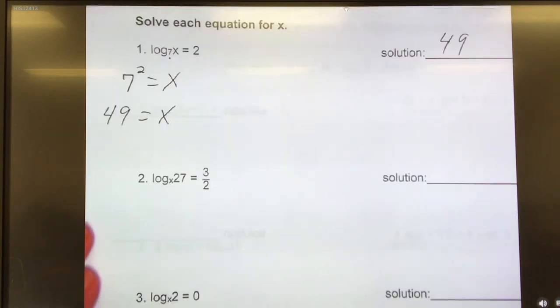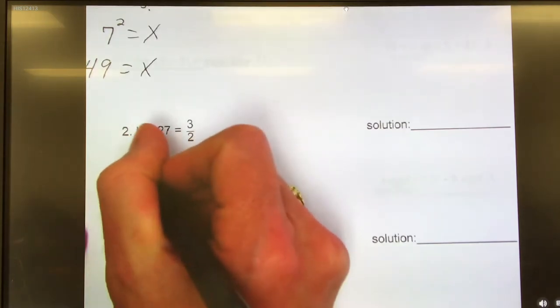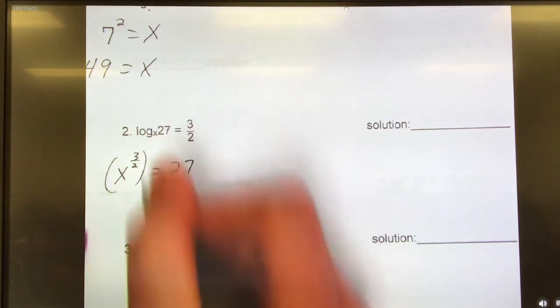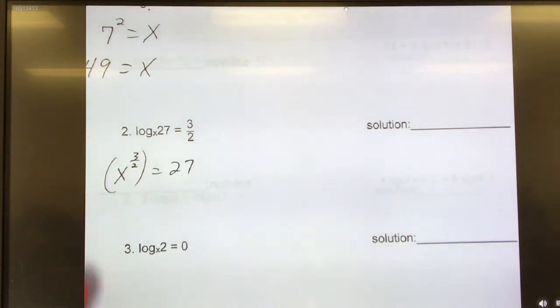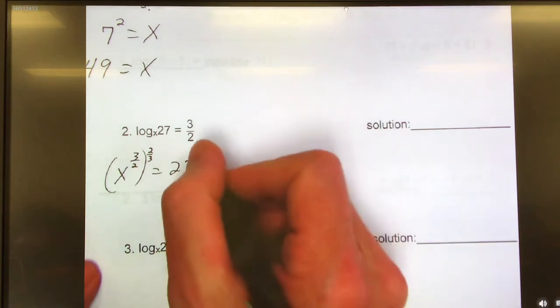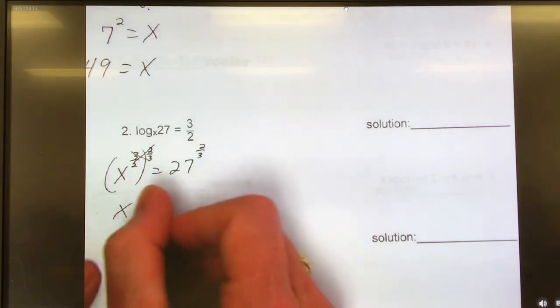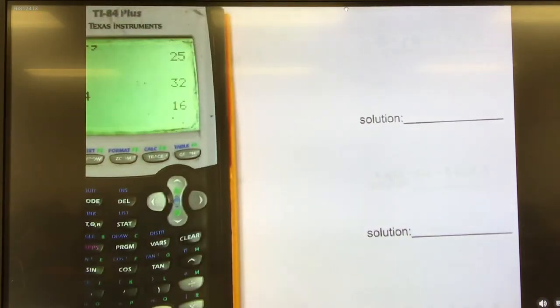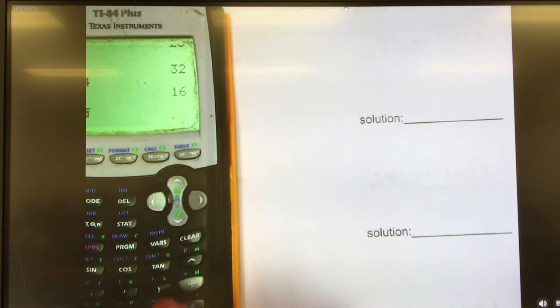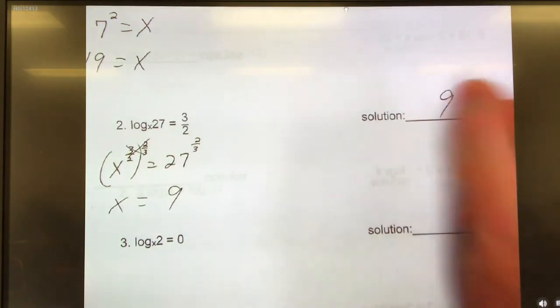Okay, next one, number 2. What's the base? X. So it's x to the 3 halves power equals 27. In order to get rid of 3 halves, I can always get rid of a fraction by multiplying by the reciprocal. So I'm raising it to the 2 thirds power. I've got to do the same thing to the other side. They cross out, so x equals 27 raised to the 2 thirds power. And you said 9? Yes, it's 9.